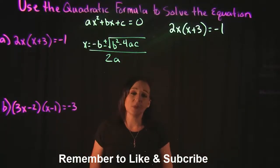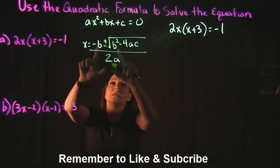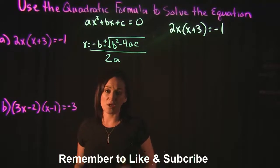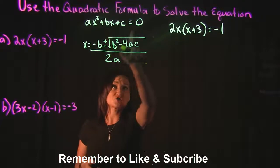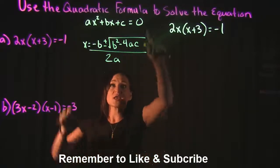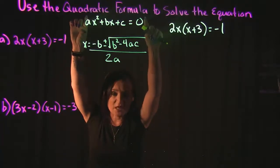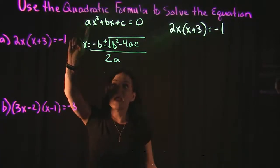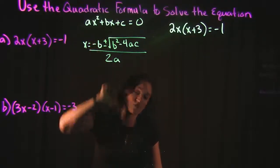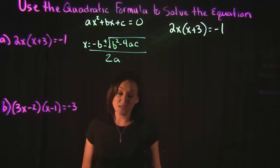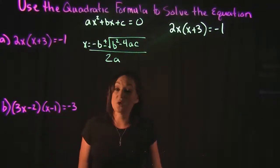The way that we know how to plug into the formula is this. The formula has a's, b's, and c's, and those values come from your quadratic equation. A quadratic equation looks like ax squared plus bx plus c equals 0, where a is the coefficient of your x squared term, b is the coefficient of your x to the first power term, and c is your constant.